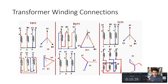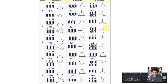Some common connections include DY1, DY11, and YZ1. All possible connections include star-star zero (zero phase shift), delta-delta zero, and DZ zero where D is delta and Z is a zigzag winding. These are the various vector group connection possibilities available for three-phase transformers.